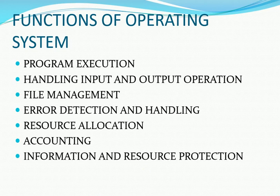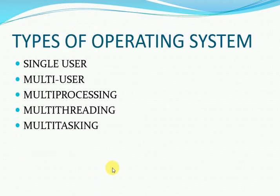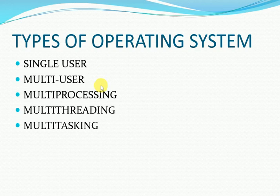Next are the types of operating systems. There are various types of operating systems: single user, multi user, multi processing, multi threading, and multitasking.